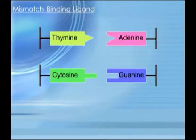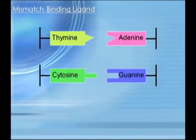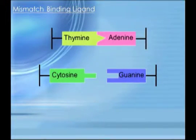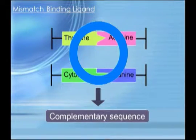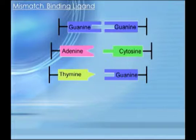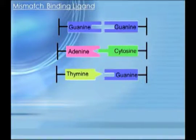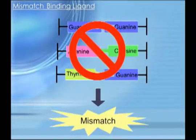Here we will introduce some of our research on synthesis and the properties of DNA mismatch binding ligands. DNA generally consists of base pairs of thymine and adenine, and base pairs of guanine and cytosine. We call these complementary sequences. On the other hand, sometimes irregular base pairs are made. These are called mismatches.